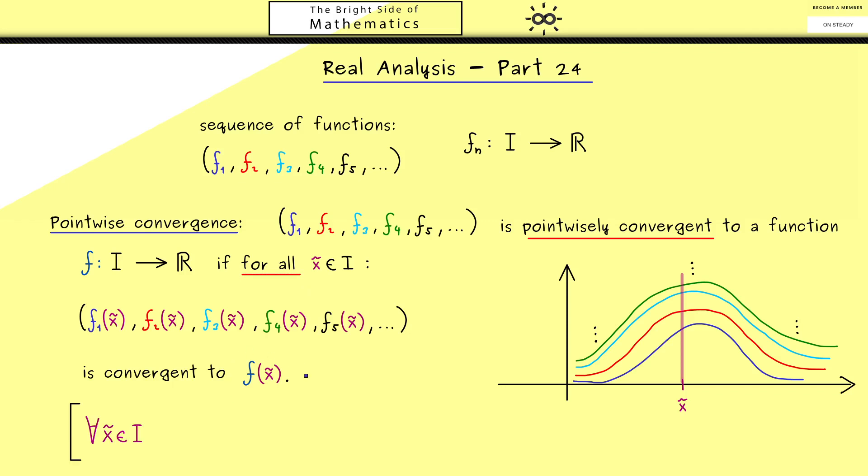It might not be surprising that we can describe the whole thing efficiently by using quantifiers. For all x tilde in I we have the convergence property. Hence for all epsilon greater than 0, we find a capital N such that for all indices afterwards, we have that the absolute value of the sequence member fn(x tilde) minus the limit is less than epsilon.